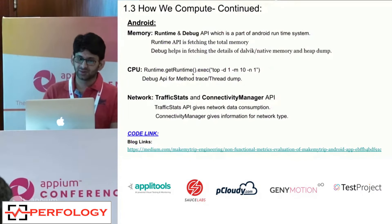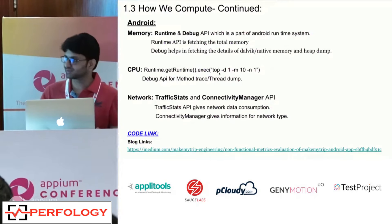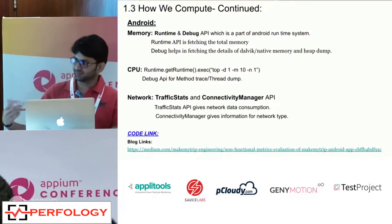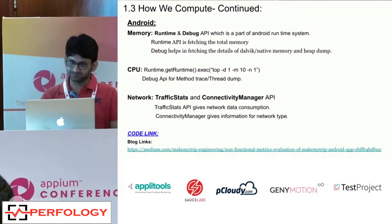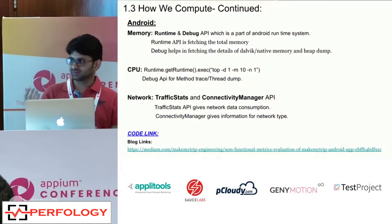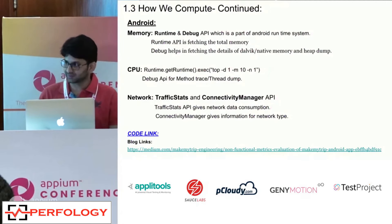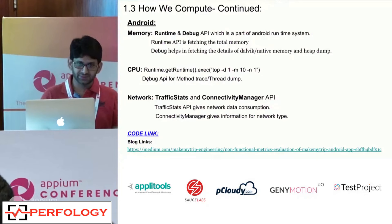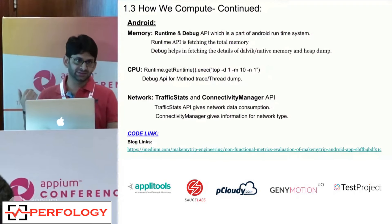For CPU, we execute a Linux top command in a separate background thread. This thread runs in parallel — when we start our scenario, it automatically invokes and polls the CPU consumption for our application package. We process and dump this data to our database. We also use the debug API for method tracing, feeding into our thread analyzer tool. For network state, we use the TrafficStats API and ConnectivityManager API. TrafficStats provides RX and TX data, while ConnectivityManager tells us the network type — Wi-Fi or cellular — and if cellular, what speed: 3G, 4G, or LTE.